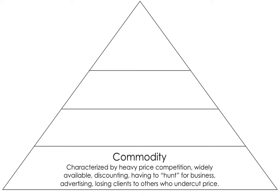Commodities are things like rice or coffee beans on the open market. A commodity is almost the same thing across the board — there's very little difference between the rice you buy from one farmer and the rice you buy from another. Things that are commodities are characterized by heavy price competition because price ends up being the number one differentiating factor. When you have a commodity-based business, you find yourself discounting a lot and trying to undercut price in order to land new business, and then you lose business to other people because there's very little loyalty involved.